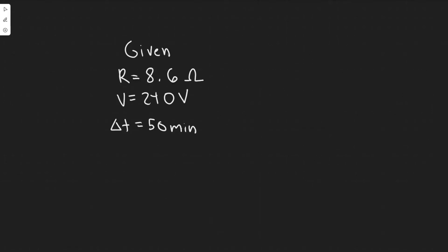In this problem, we're told an electric clothes dryer has a heating element with a resistance of 8.6 ohms. Part A asks what is the current in the element when it's connected to 240 volts? Part B asks how much charge passes through the element in 50 minutes, assuming direct current. The first thing I want to do is write down what we're given.